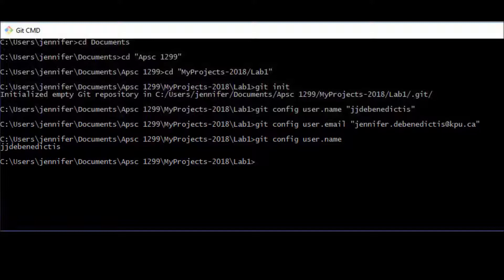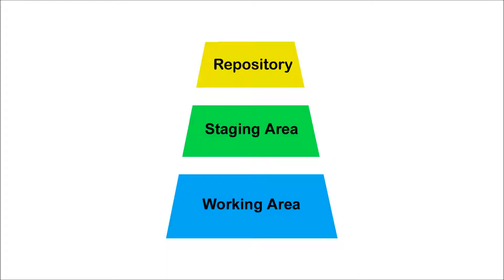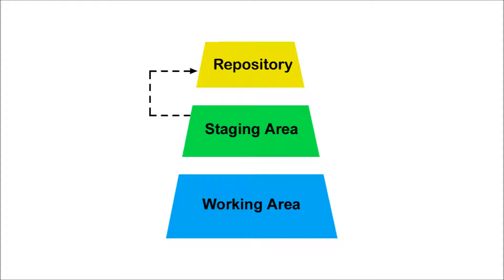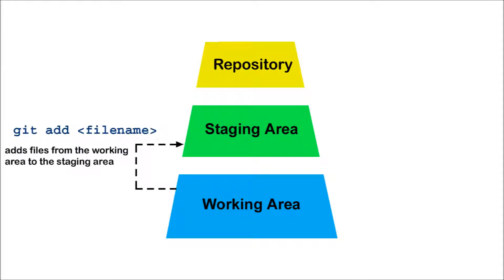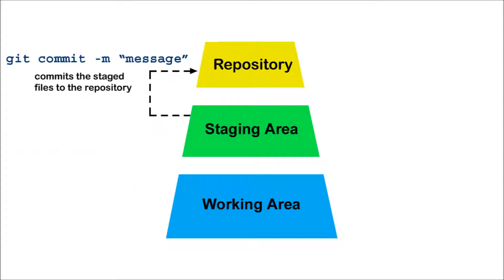Now I'm going to show you how to actually use Git — how to add files to the staging area and then commit them to the repository. I'm going to teach you six different commands, so here's a quick overview. To add files to the staging area, you type git add and then the file name — you add your files one by one. To commit files to the repository, you type git commit -m and then your message in quotes. When you make a commit, you are committing all of the files that were in the staging area at once.